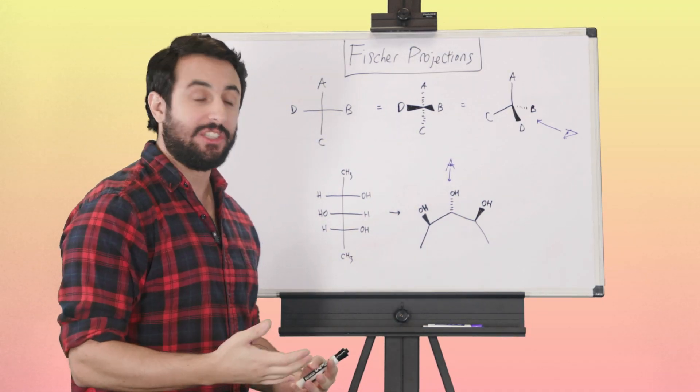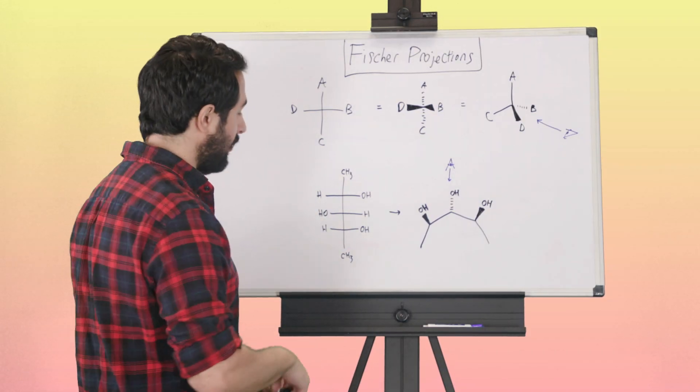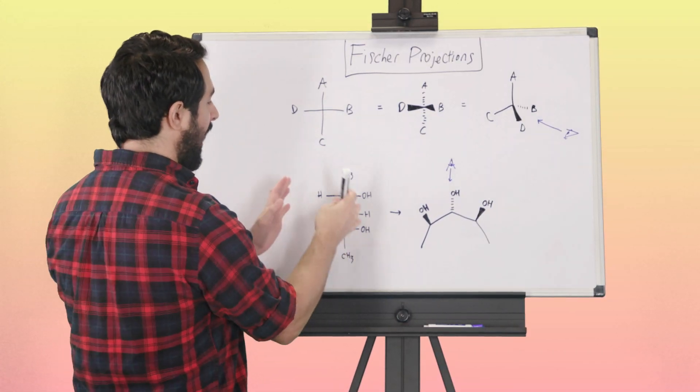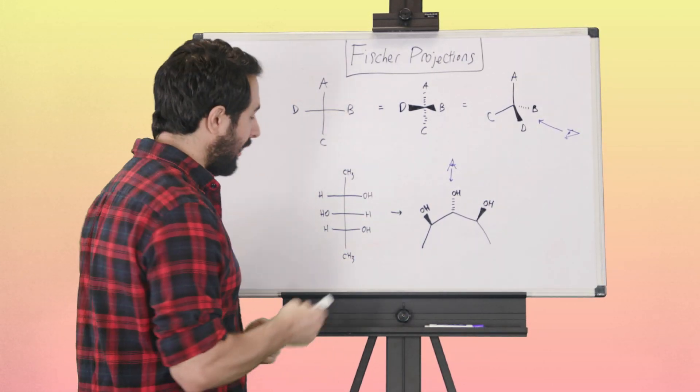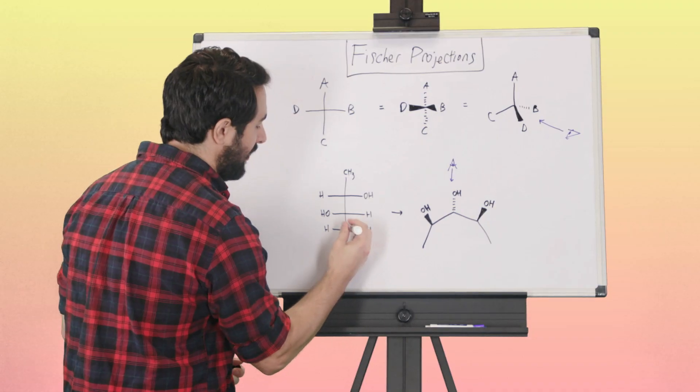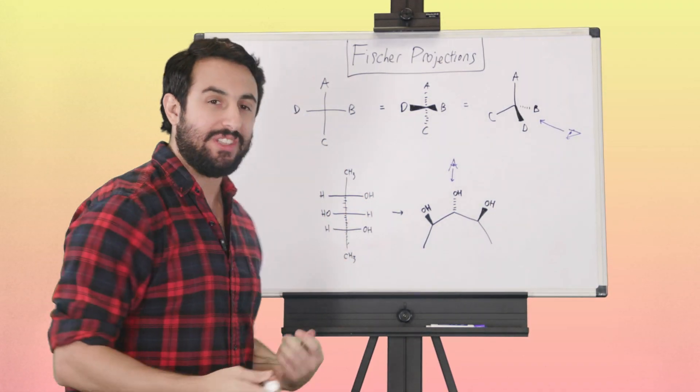We have to remember that this is not implying that this is a flat molecule. These are sp3 hybridized carbons—those are tetrahedral centers. When we have a longer one like this, it can get confusing because these are all implied to be dash bonds. It might seem strange how we can have all these dash bonds in a row.